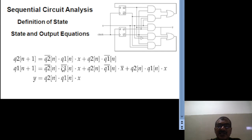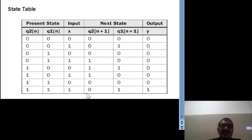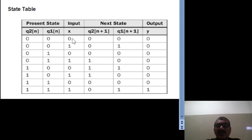The y output is x into Q2(n) into Q1(n). That is the y equation. From this diagram we derive the state and output equations — the first two are the state equations and the last one is the output equation. The characteristics of this circuit are represented through these state and output equations. Another way to represent the characteristics of a sequential circuit is the state table, which is analogous to the truth table in combinational circuits. In the state table, the first section includes present state and input notations.